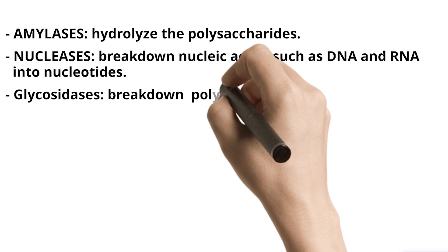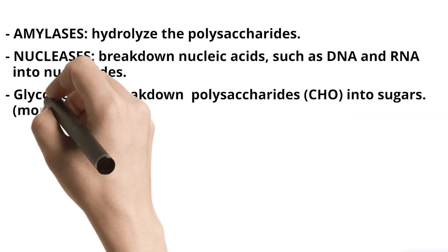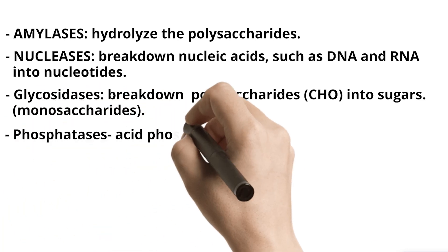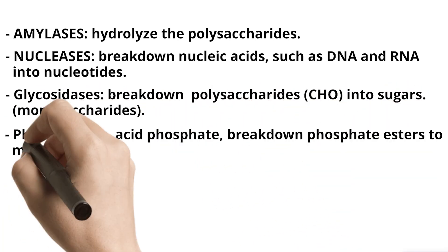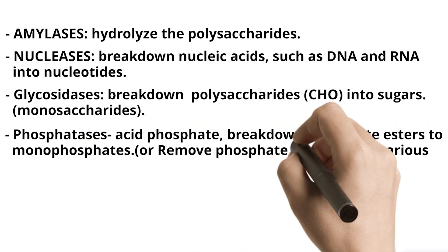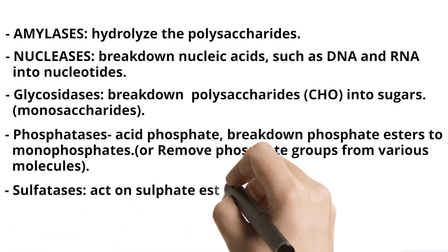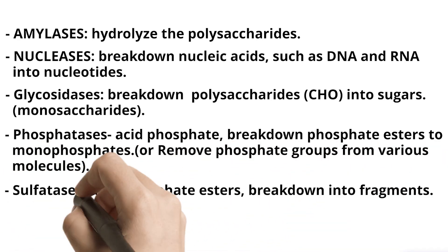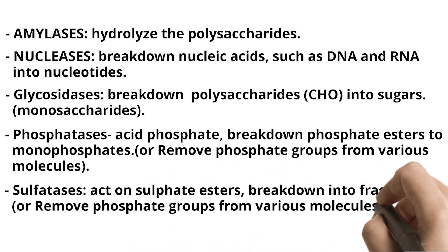Glycosidases — break down polysaccharides (CHO) into sugars, monosaccharides. Phosphatases (Acid phosphatase) — break down phosphate esters to monophosphates, or remove phosphate groups from various molecules. Sulfatases — act on sulfate esters, break down into fragments, or remove phosphate groups from various molecules.